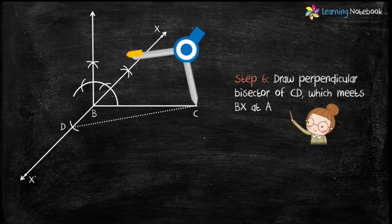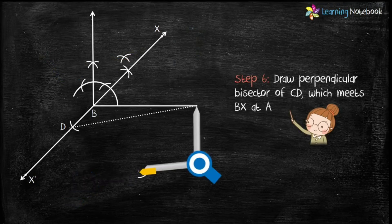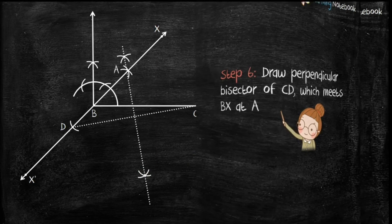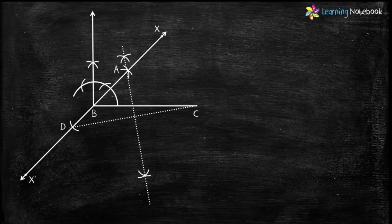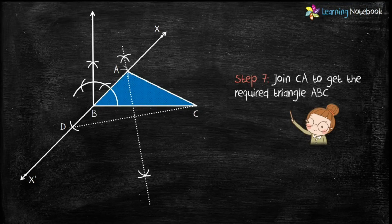In step 6, draw perpendicular bisector of CD which meets BX at point A. Students you may refer to part 2 of this chapter to learn step by step construction of a perpendicular bisector of a line segment. Now in last step 7, join CA to get the required triangle ABC.